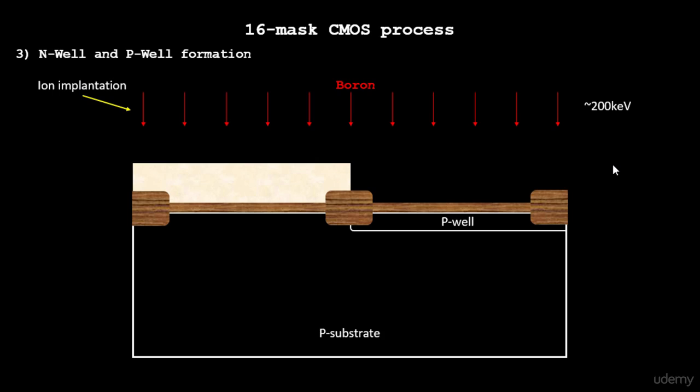Boron being P-type, it creates a P-well over here, and the energy needed to diffuse the boron through the oxide layer present here is about 200 kilo electron volts. We'll talk about the energy and ion implantation process in a separate course.